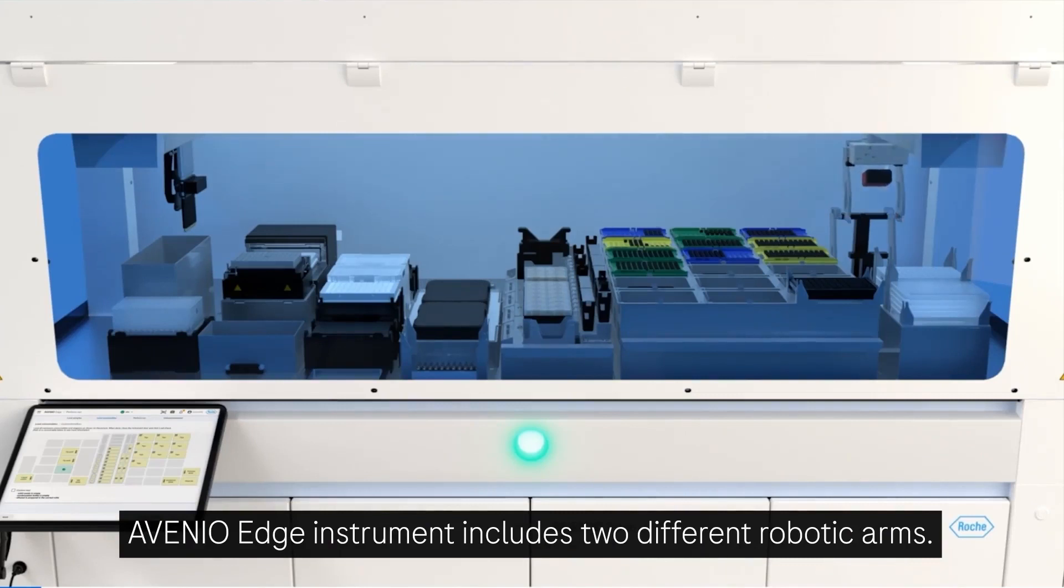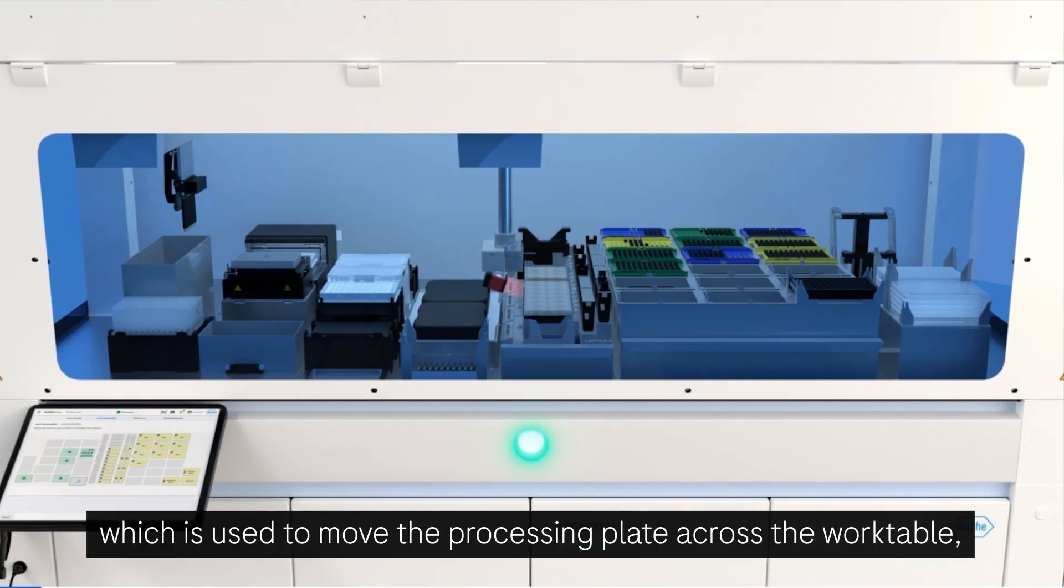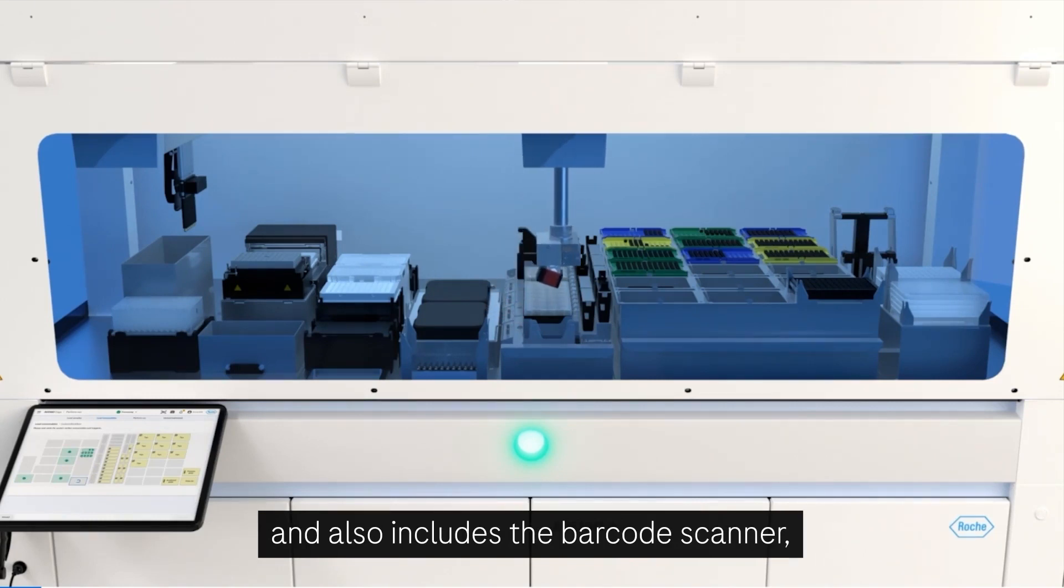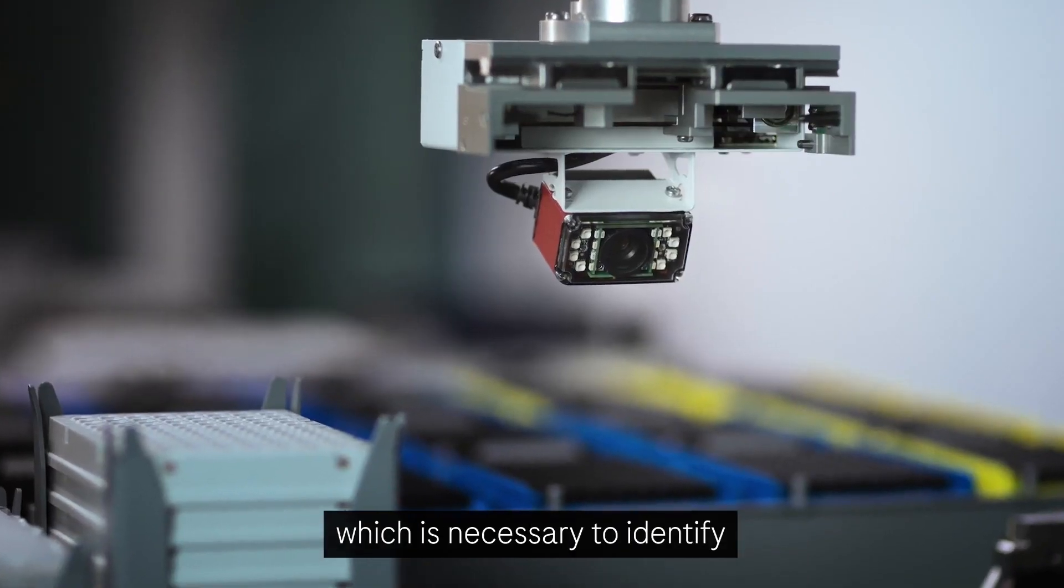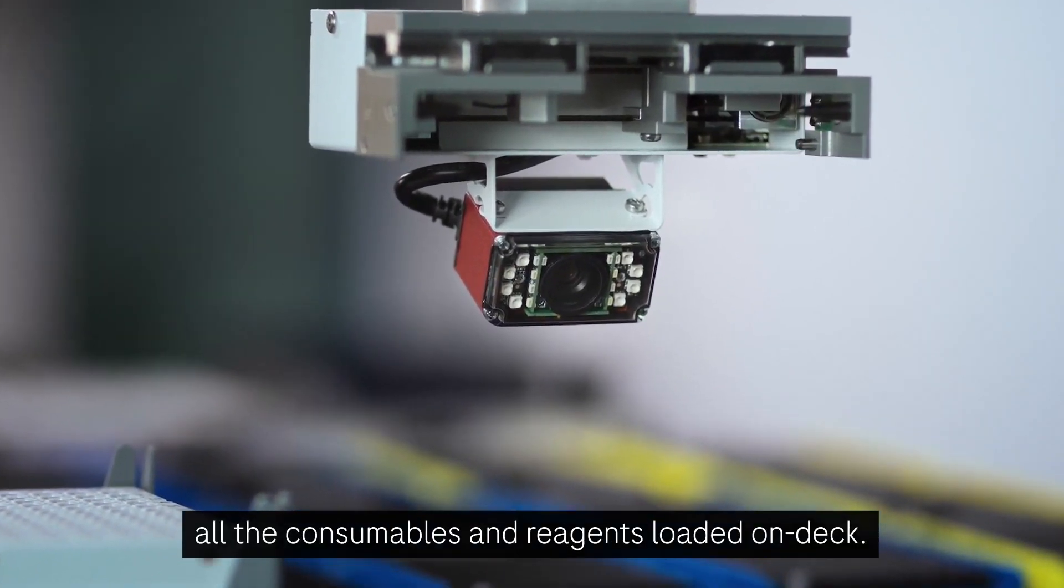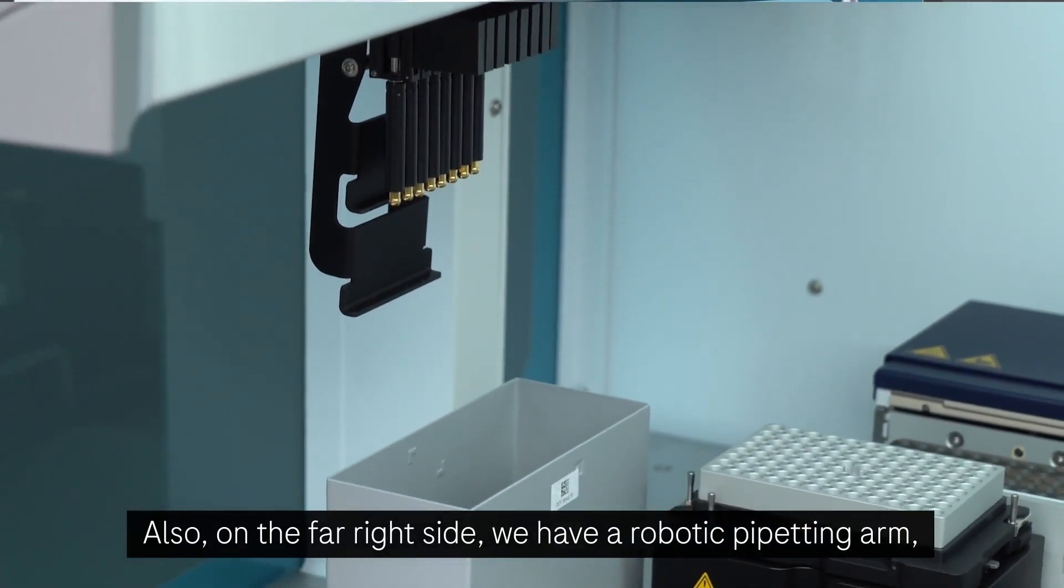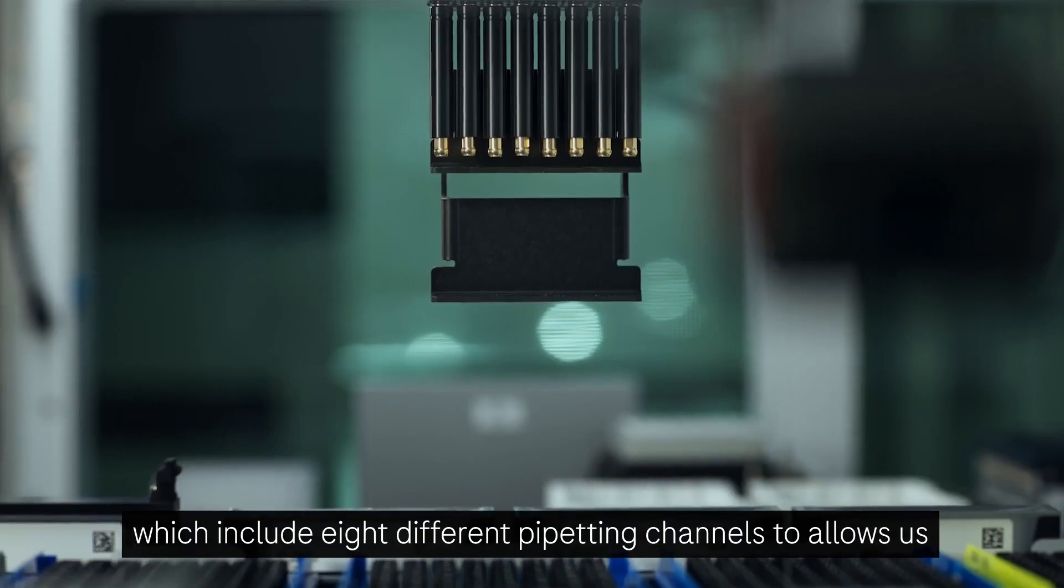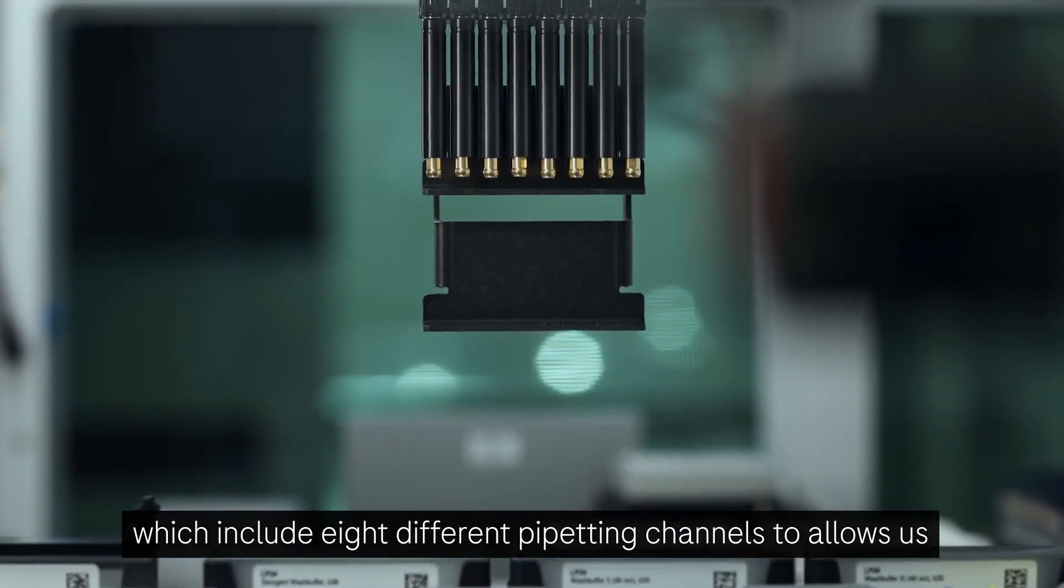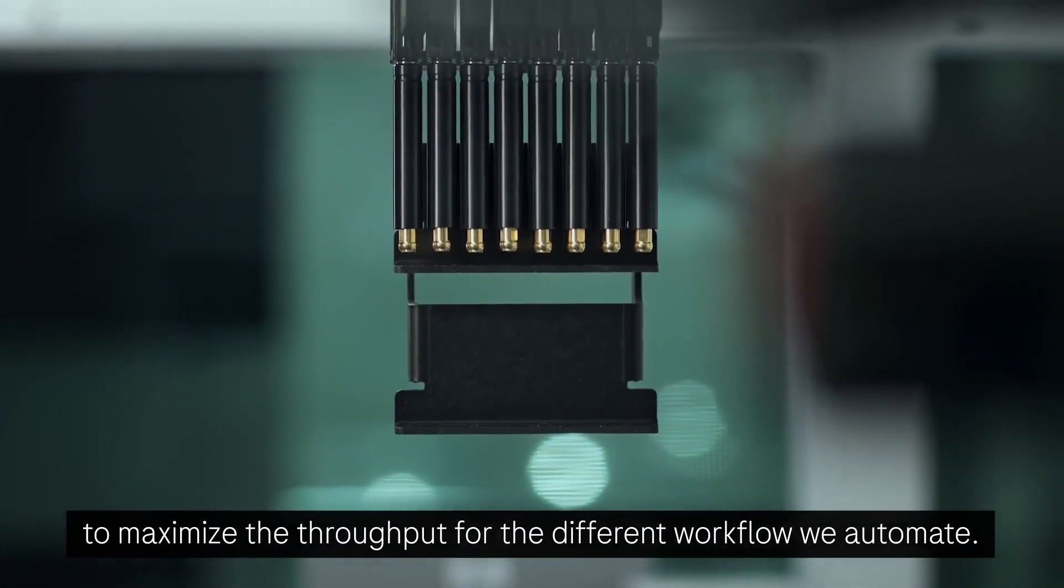The Avino Edge instrument includes two different robotic arms. We have the robotic gripper arm, which is used to move the processing plate across the work table and also includes the barcode scanner, which is necessary to identify all the consumables and reagents loaded on deck. Also on the far right side, we have a robotic pipetting arm, which includes eight different pipetting channels to allow us to maximize the throughput for the different workflows we automate.